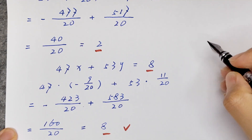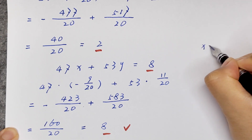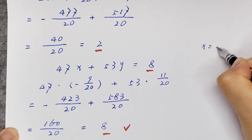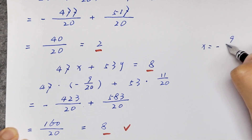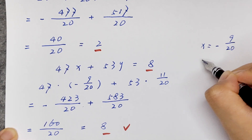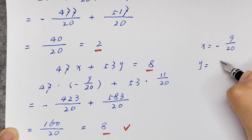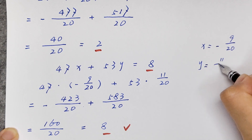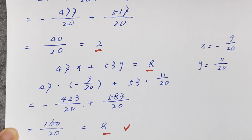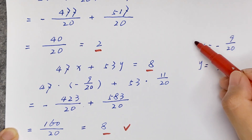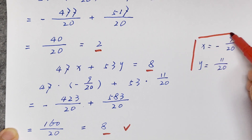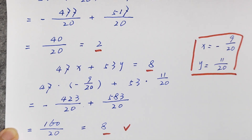So x equals negative 9 over 20, and y is equal to 11 over 20 is the final answer. Thank you for watching and see you in the next video. Bye bye.